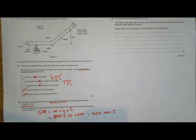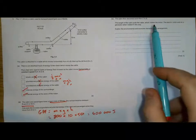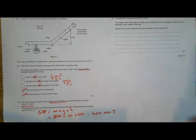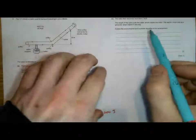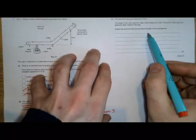Part C. The cabin descends from C to B. The weight of the cabin pulls the cable, which rotates the motor. The electric motor acts as a generator when rotating this way. Explain the environmental and economic benefits of this arrangement.